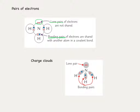The electrons exist in what we call charged clouds, and we get two electrons — a pair of electrons — in each charged cloud. We have our lone pair and our bonding pairs of electrons. Importantly, charged clouds or electron clouds are going to repel each other, and it's that repulsion which gives the overall molecule its final shape.